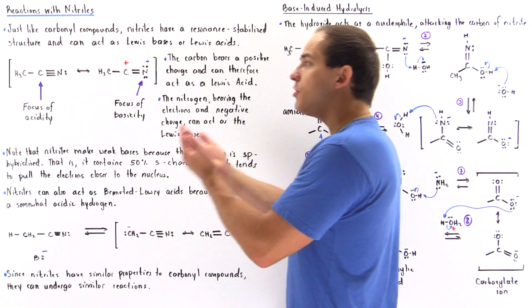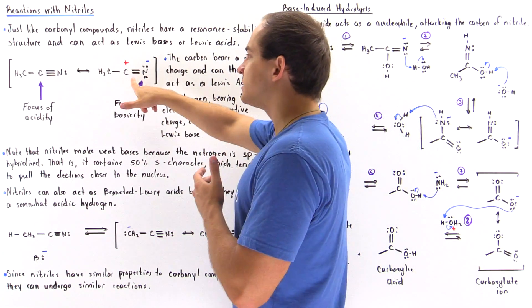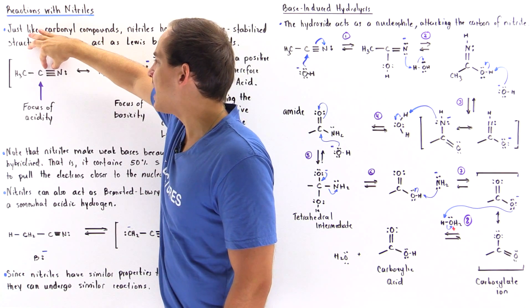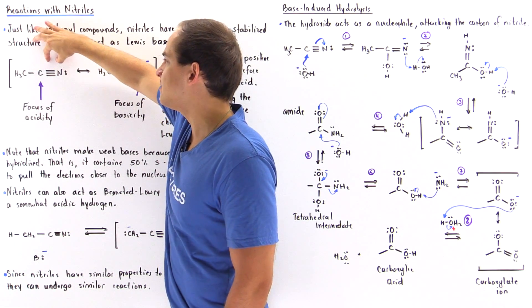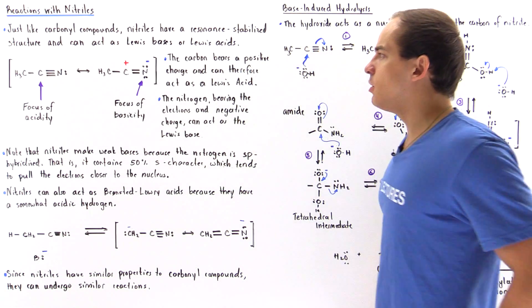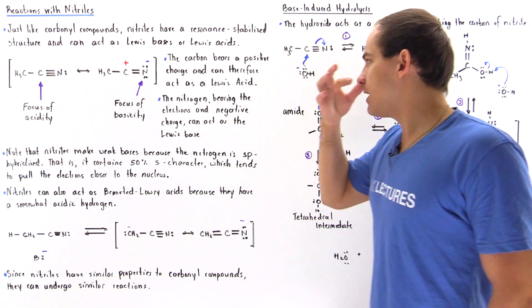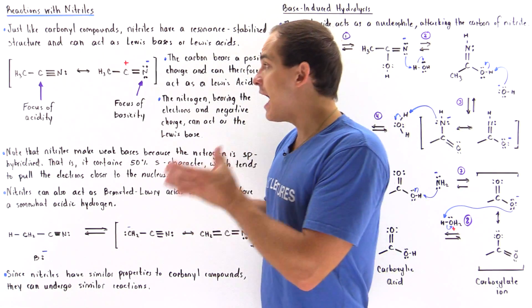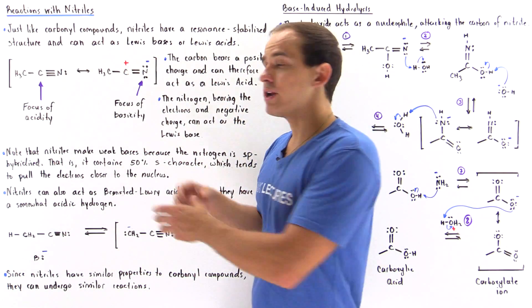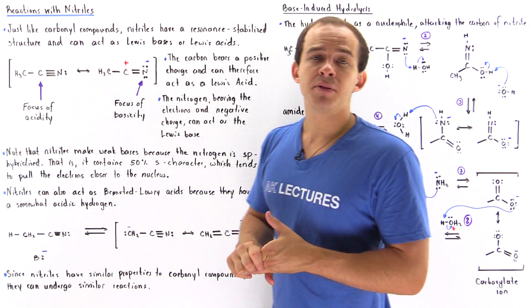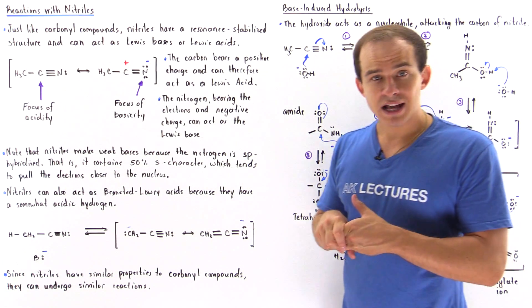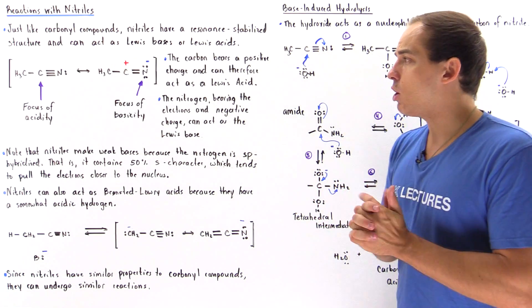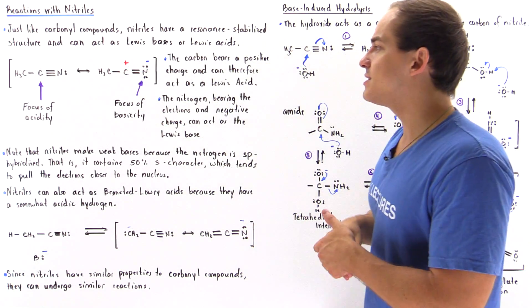The other resonance-stabilized structure looks like this: because nitrogen is more electronegative, it pulls away the second pi bond from the midsection and places it onto the nitrogen. We place a full negative charge on the nitrogen and a full positive charge on the carbon. The actual structure of our nitrile is somewhere in between, implying that our carbon has a partial positive charge, our nitrogen has a partial negative charge, and we have an electric dipole moment pointing from the carbon towards our nitrogen.